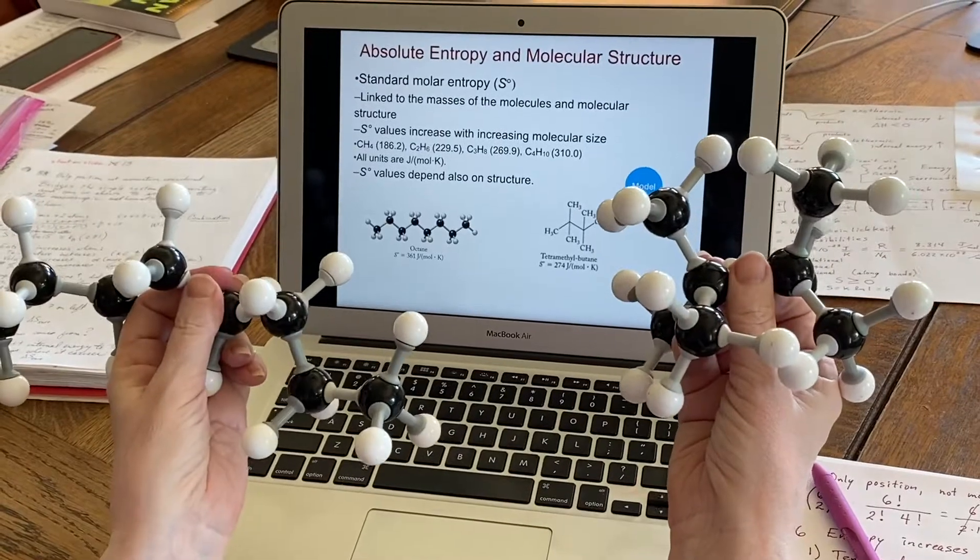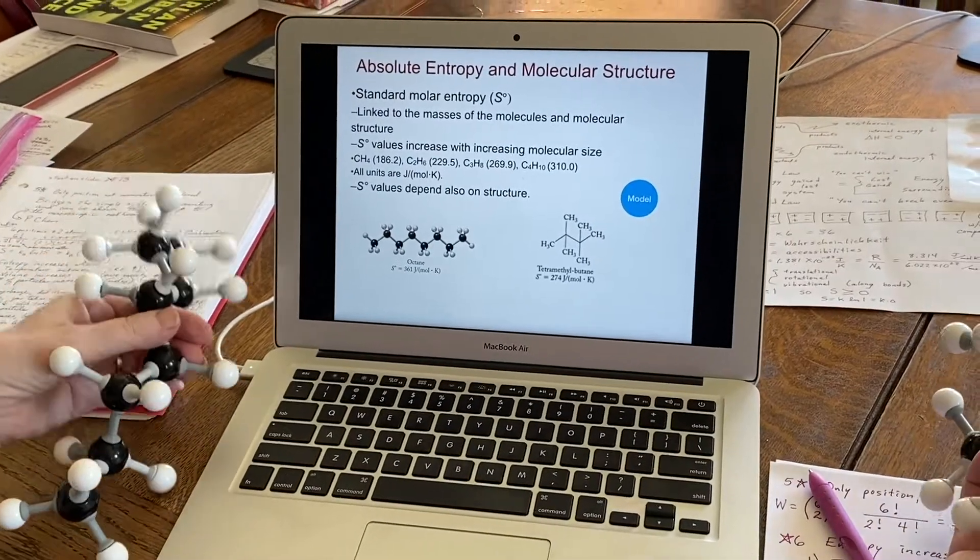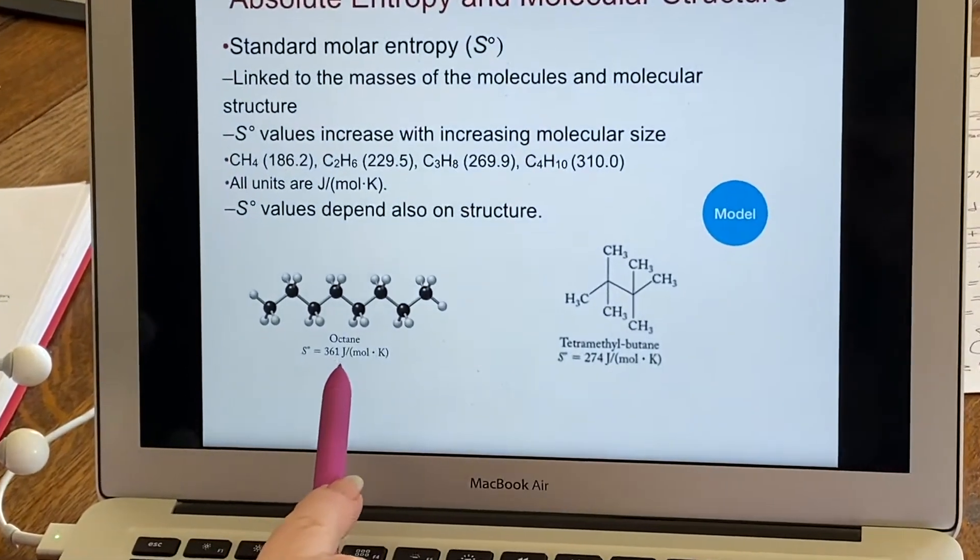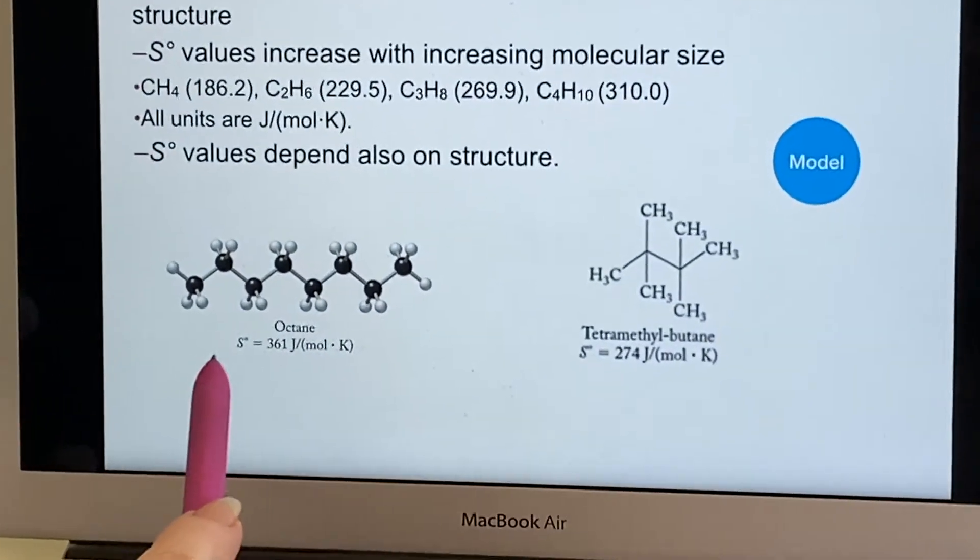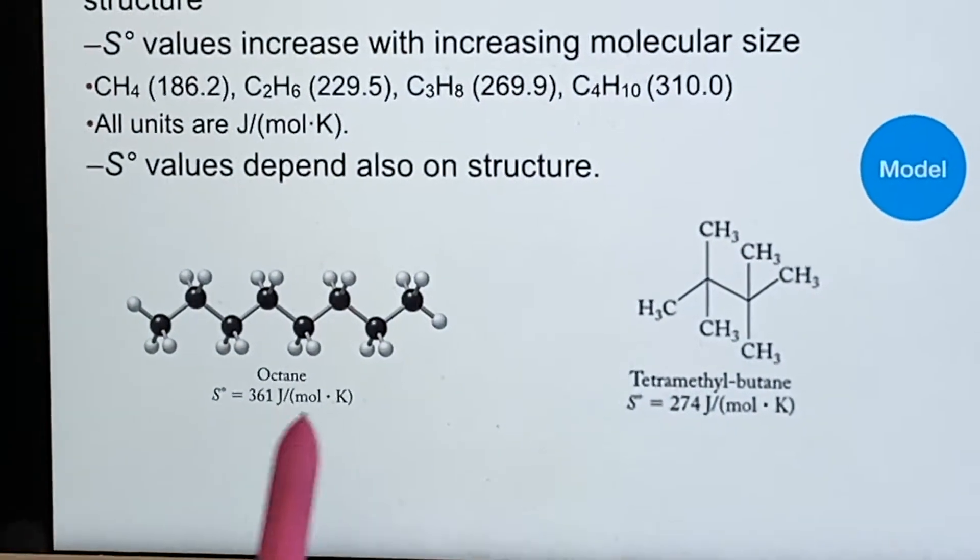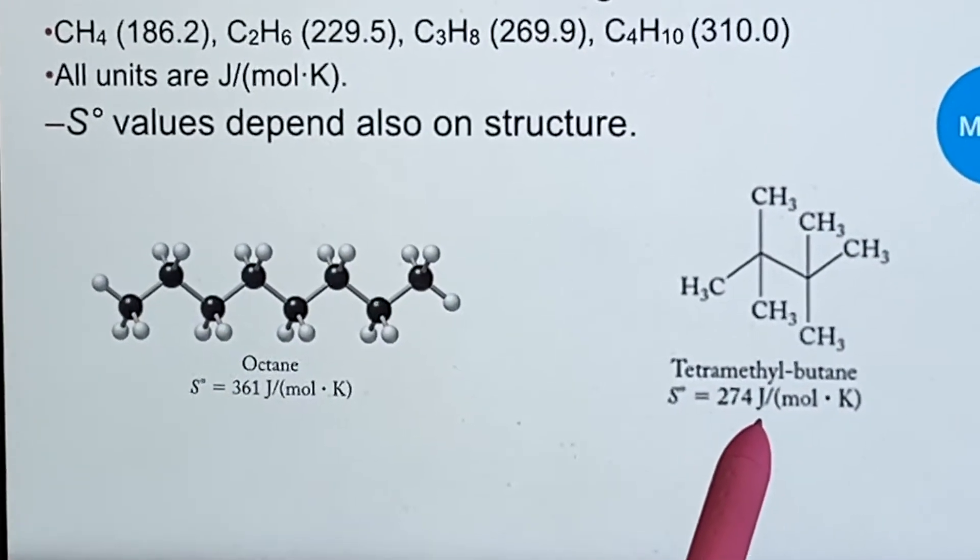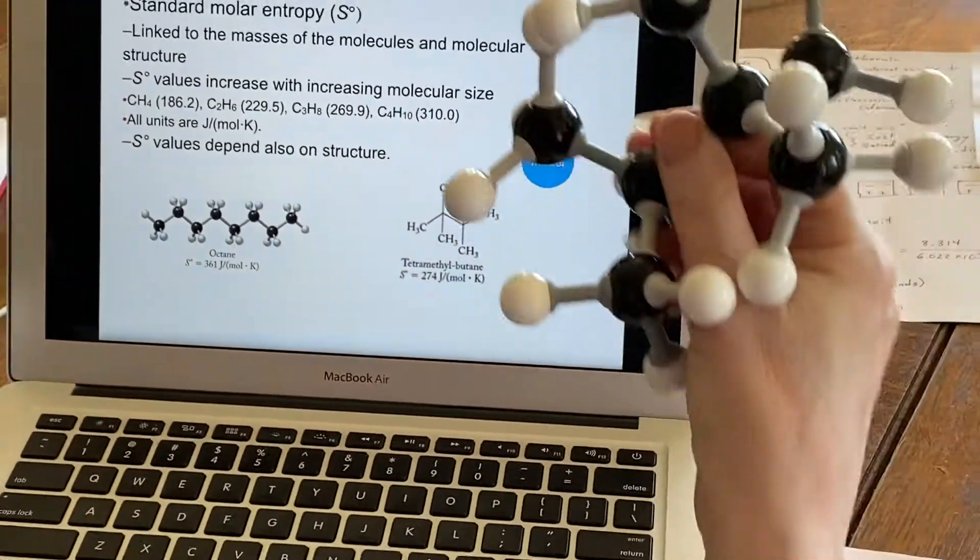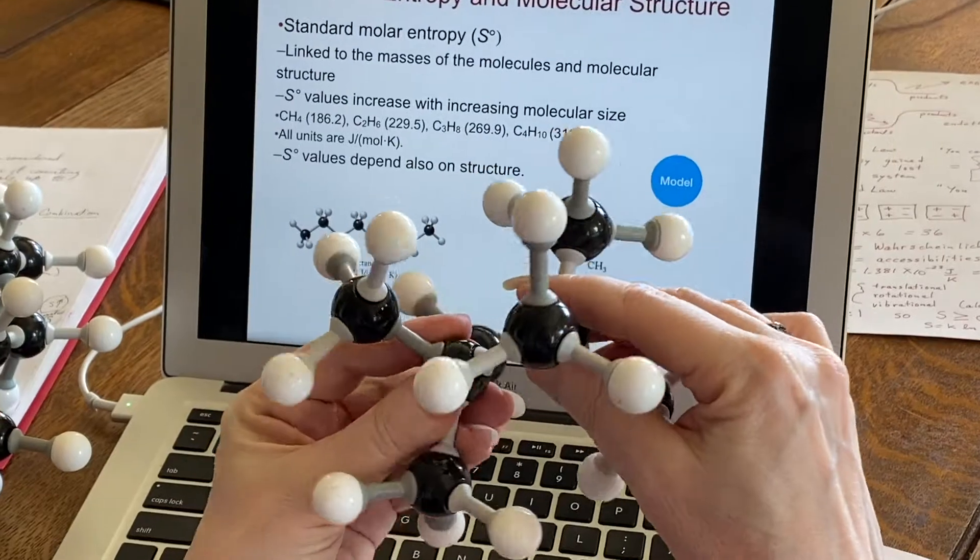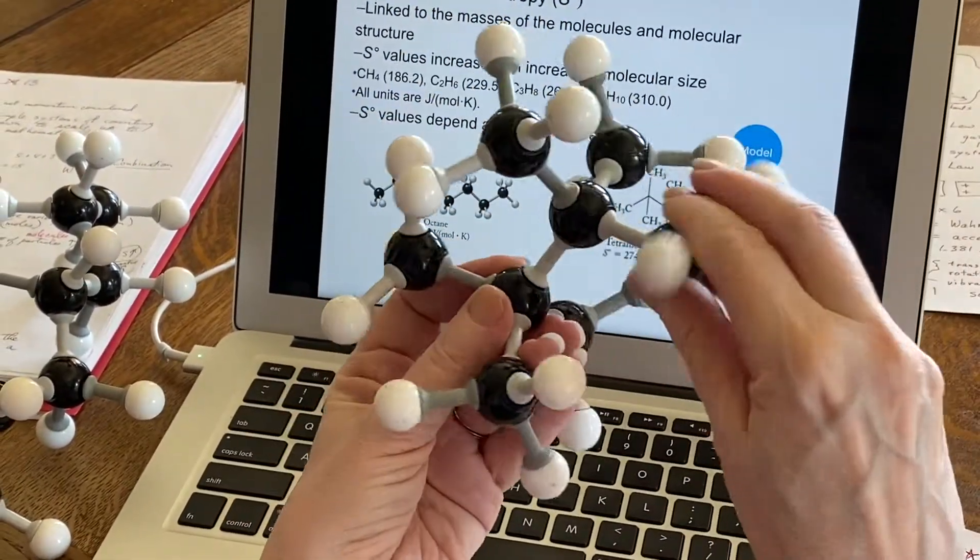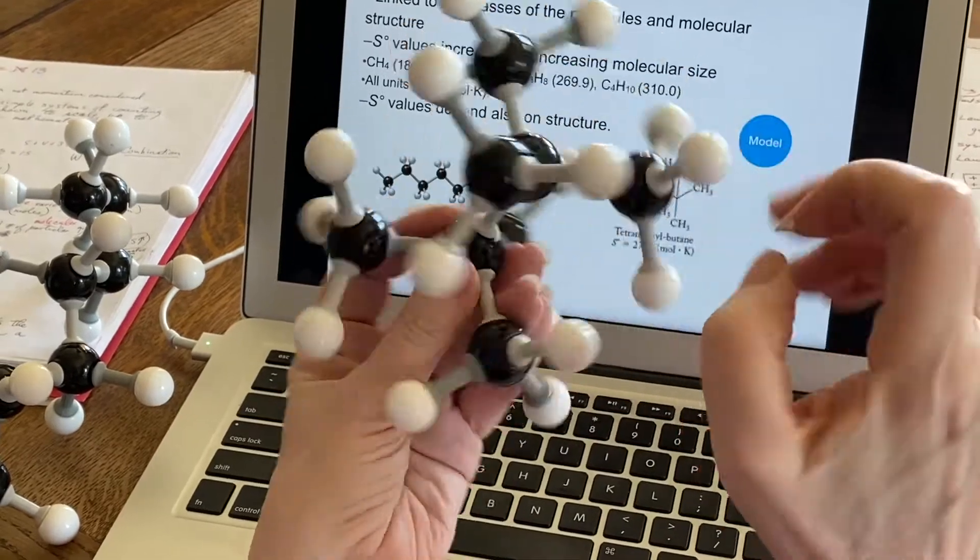However, if you go and you look up the numbers for the standard molar entropy, you find out that the one for octane is significantly higher than the one for the tetramethylbutane. Well, why is that? Well, let's start thinking about how much motion these can actually do.